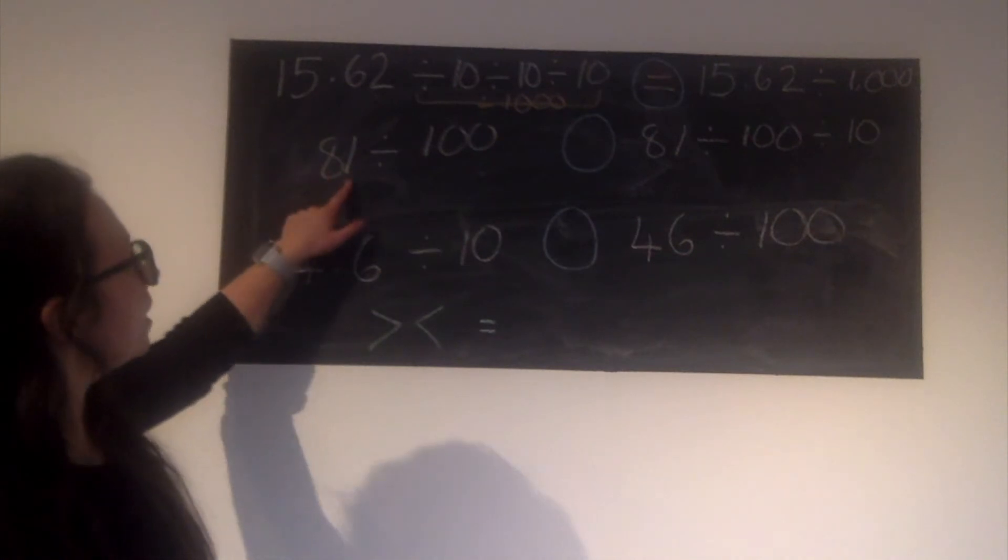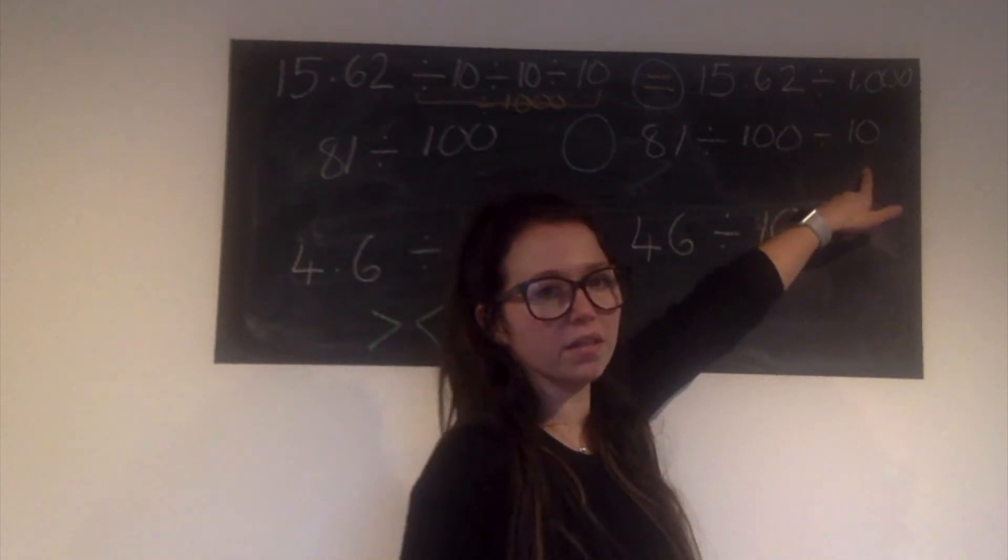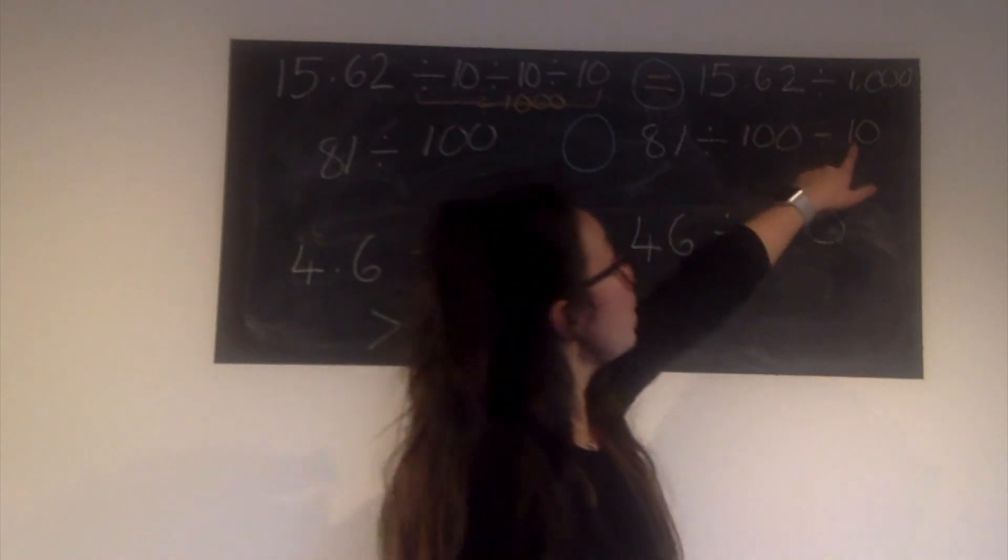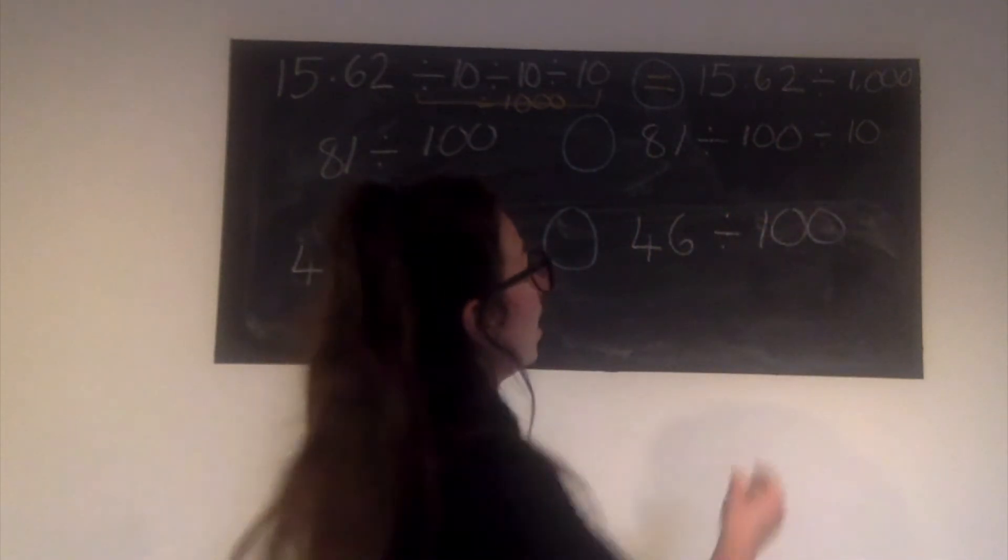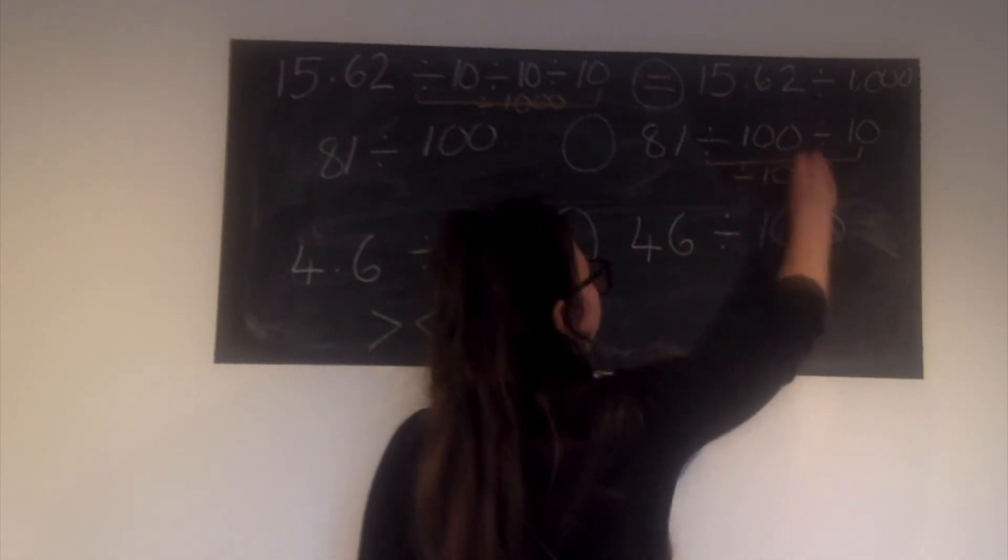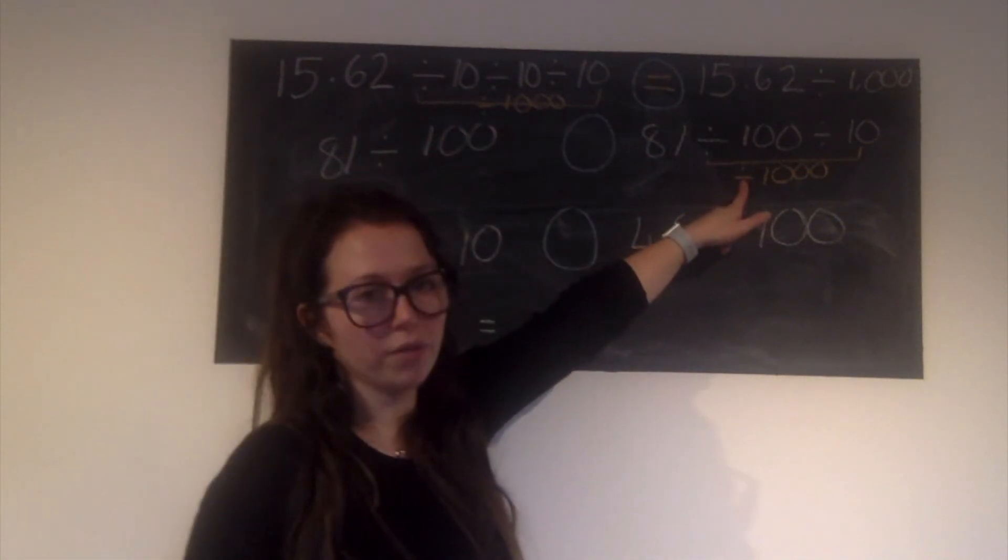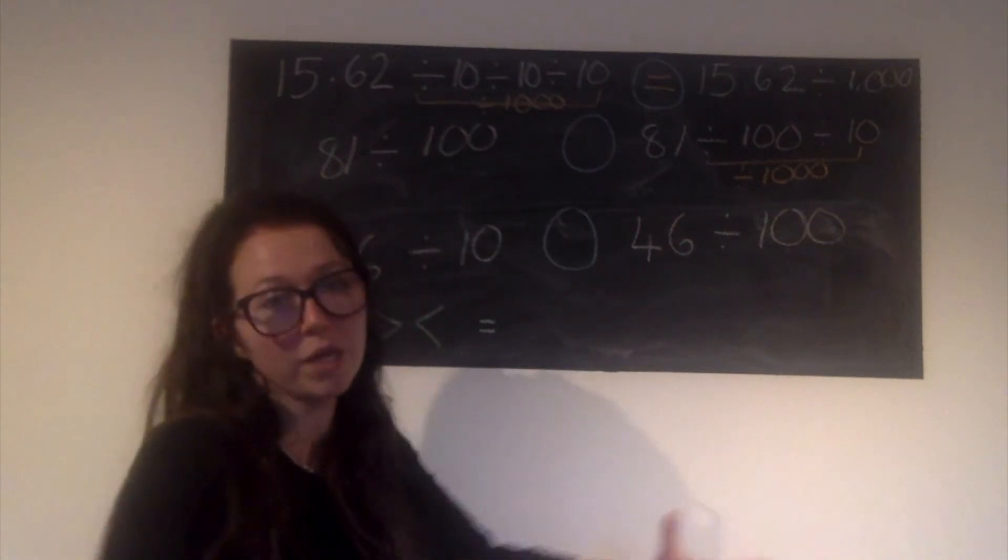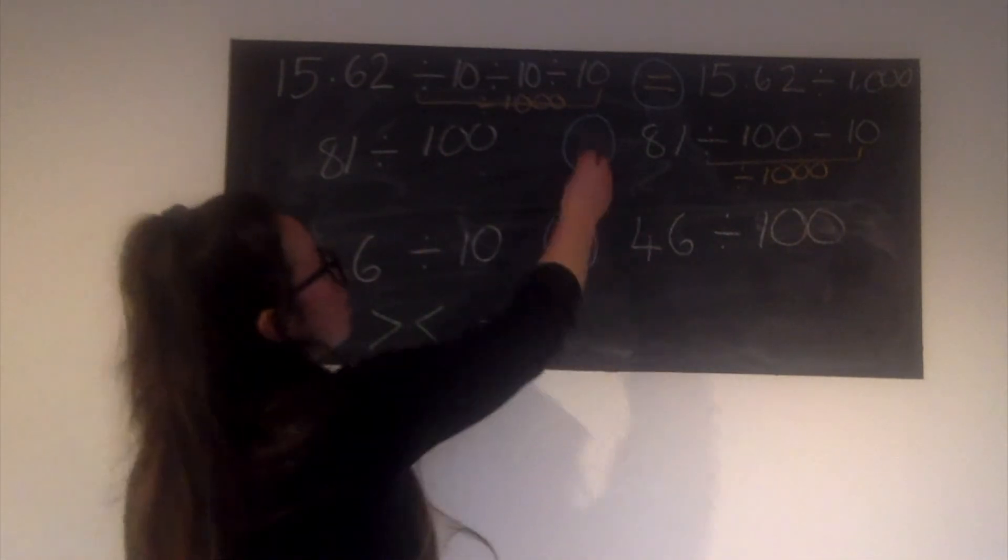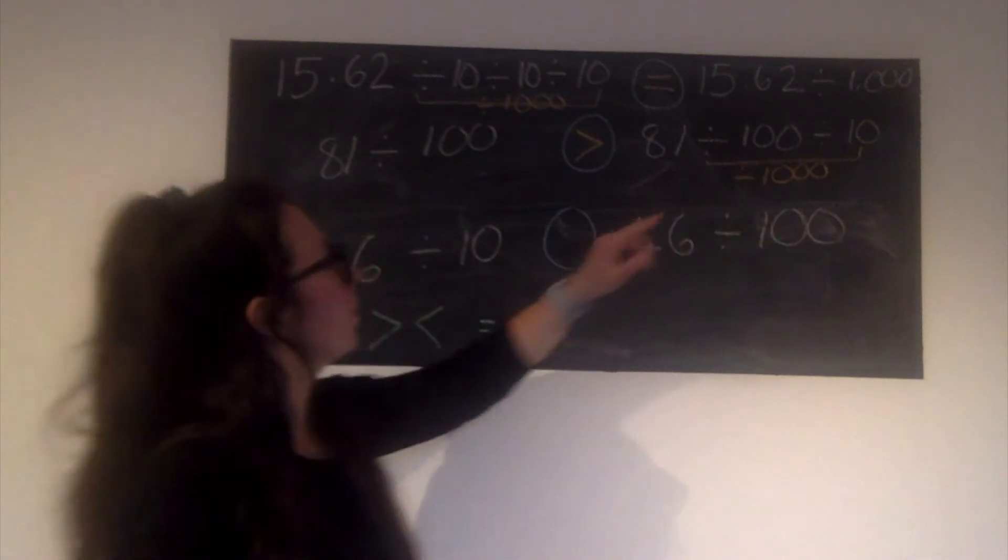The next one: 81 divided by 100. Is that the same as 81 divided by 100 divided by 10? Well, it can't be the same because this one we've already divided by 100 and then we're dividing it by 10 again, making it 10 times smaller. So what we've actually done here is divided by 1000. So let's think about which one's bigger. If I divide something by 100 or if I divide something by 1000 - think about the more people you are sharing between, the smaller your piece will be. So dividing by 100 is going to give me the bigger answer than dividing something by 1000.